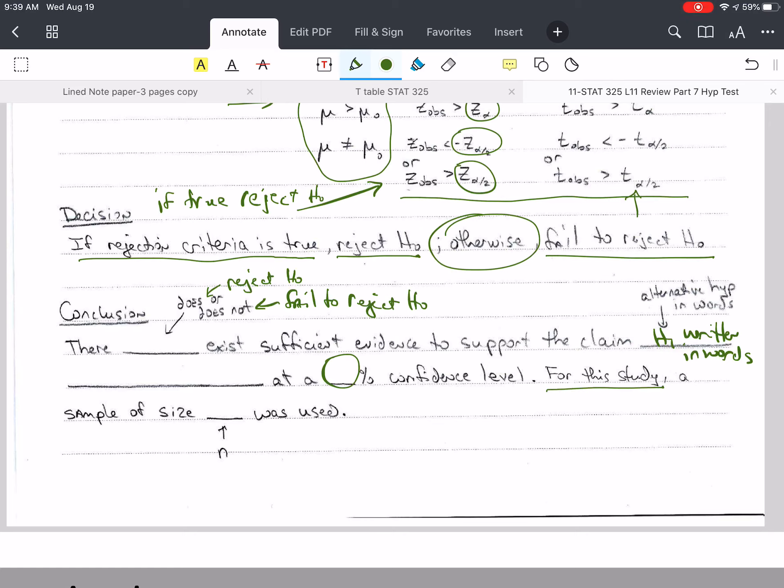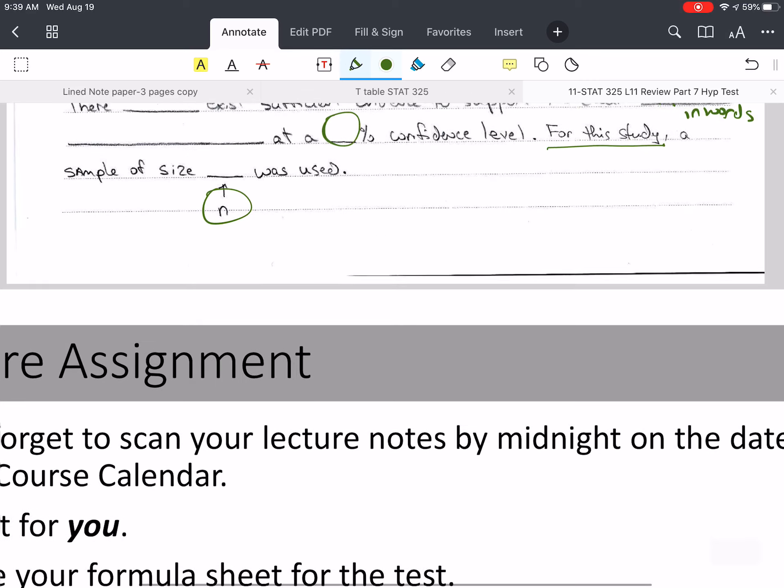And then, for this study, a sample size of whatever N was used, because that tells people a lot. If you only have 10 as your sample size, your results aren't very stable. But if you have hundreds or thousands, then your results are very stable.